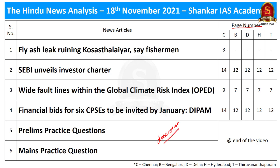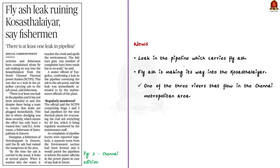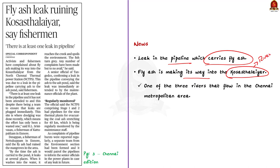Let us get into our discussion. This news article reports about a leak in the pipeline which carries fly ash. As per the news article, due to the leak that has happened, the fly ash is found to make its way into the Kosasthalaiyar — one of the three rivers that flow in the Chennai metropolitan area.